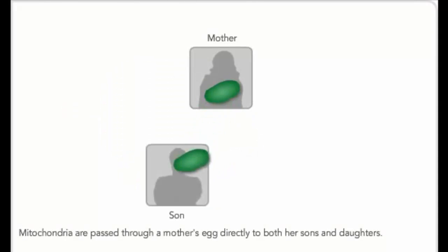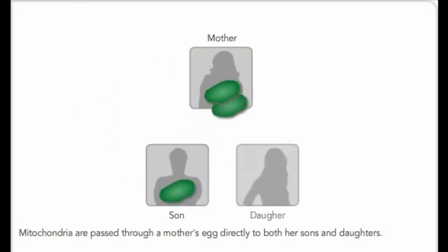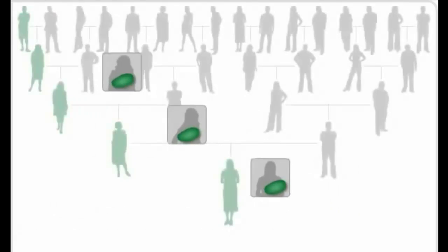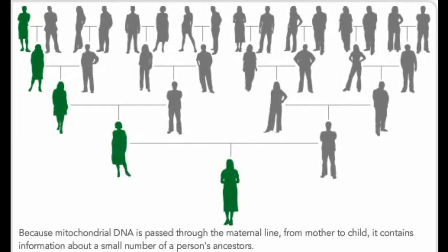Mitochondria are passed through a mother's egg directly to both her sons and daughters. In turn, her daughter, but not her son, passes mitochondrial DNA to her children. Because mitochondrial DNA is passed through the maternal line, from mother to child, it contains information about a small number of a person's ancestors.